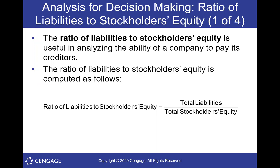What's our liabilities over, or divided by, our equity? So if half of our assets were owned by us and the other half were liabilities owned by someone else — the bank, someone we borrowed from — then this ratio would come out to one, because you'd have the same amount of liabilities as you have equity.